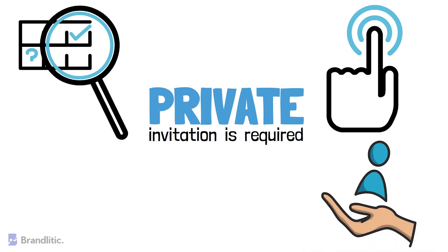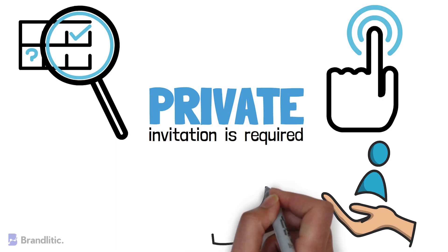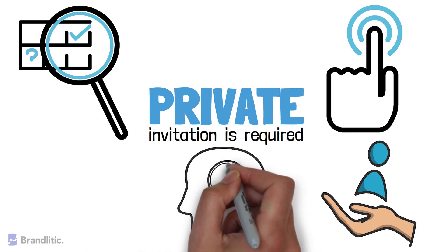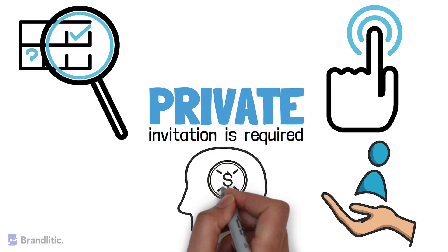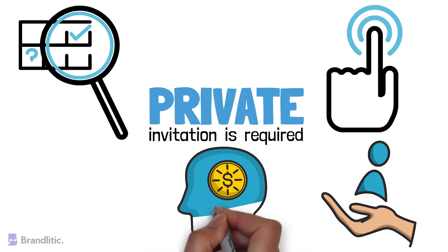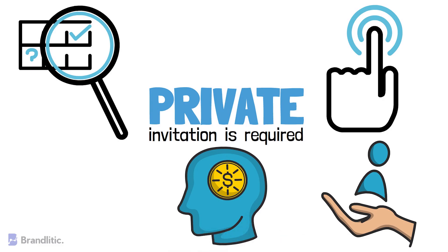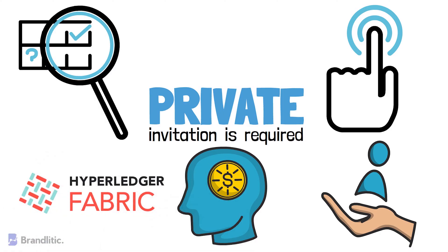Also, these blockchains can have a token or may not have one and can be manipulated based on the preference of the blockchain owner. Private blockchains usually have a network administrator who can take care of the user permission in case any particular user requires additional authority on the go. These are typically used in private organizations to store sensitive data about the organization — for example, Hyperledger.